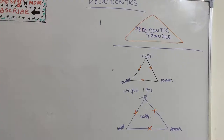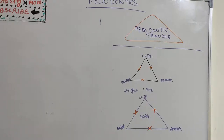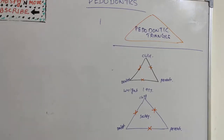The next topic is the pedodontic triangle. In pedodontics we deal with very unique kids — their psychology is very different, they can be very difficult to manage inside a dental clinic, and parents are very apprehensive. Managing a child patient is very critical to give proper treatment. The pedodontic triangle is a concept put forward by Wright in 1975.